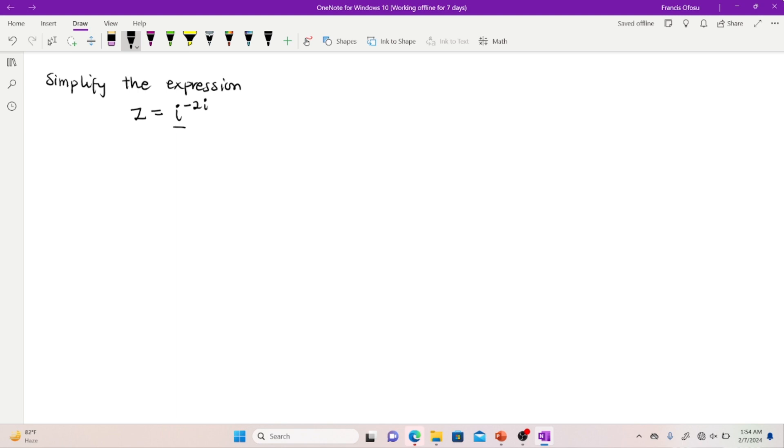So we are having a complex number i raised to the power negative 2i which is also a complex number. How do we solve such problems? Watch closely as I take you through how to solve such a problem.